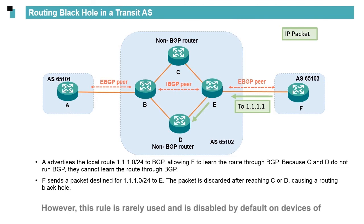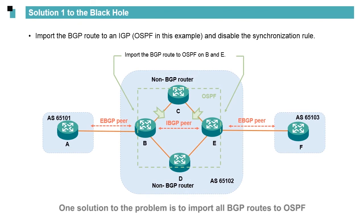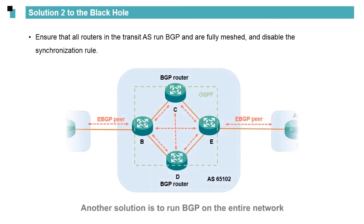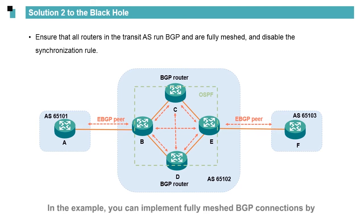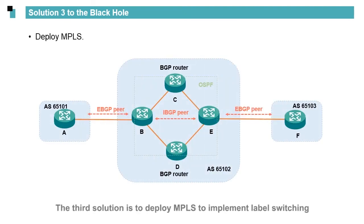However, this synchronization rule is rarely used and is disabled by default on devices of many mainstream vendors. One solution to the problem is to import all BGP routes to OSPF, but this is not advisable because it would cause the links in the transit AS to be heavily loaded. Another solution is to run BGP on the entire network — for example, by also deploying BGP on C and D for fully meshed BGP connections. The third solution is to deploy MPLS to implement label switching, which will be covered in subsequent courses.